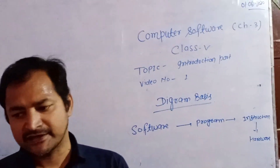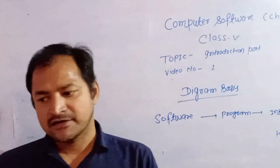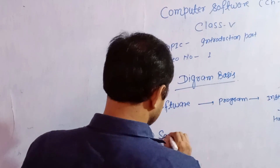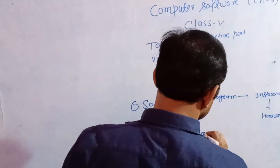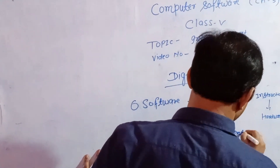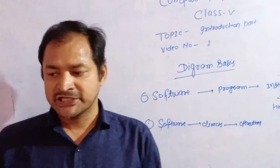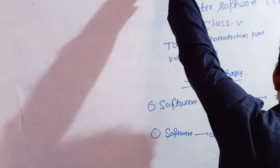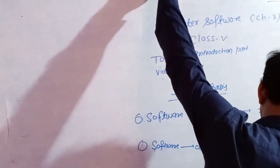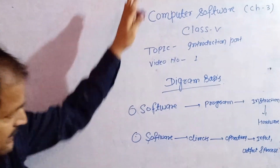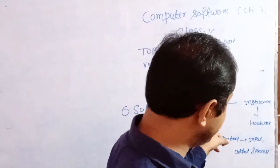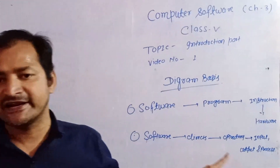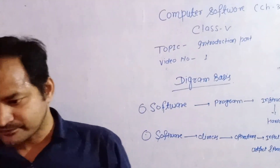In other words, software directs and guides operations — the IPO cycles. You already studied this: these operations are related to input, output, and process of the computer system.